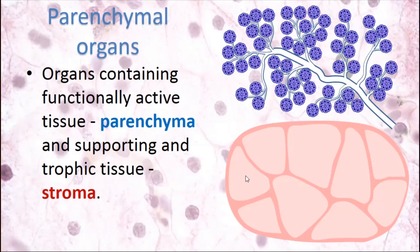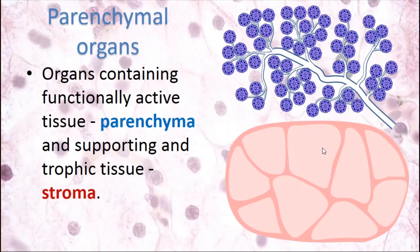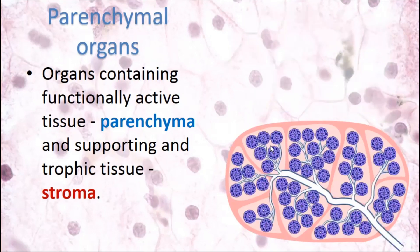Stroma is formed mainly by connective tissue — loose and dense fibrous connective tissue. It fills the space between parenchymal structures and divides parenchyma into structural units. Stroma is non-specific and similar in different organs; the main differences between organs are located in the parenchyma. Parenchyma is embedded into the stroma — it is located inside it — and parenchymal cells and structures are contained within different stromal frameworks.